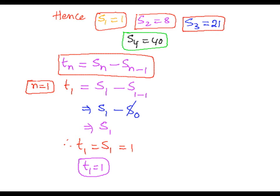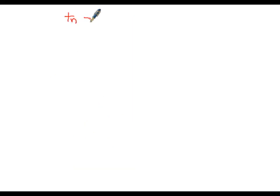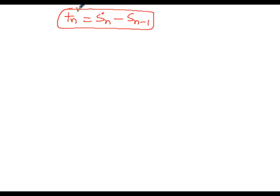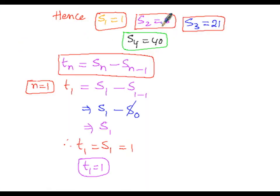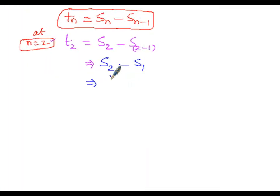To get the second term, at n equals 2, T(2) equals S(2) minus S(1). As per the problem, S(2) equals 8 and S(1) equals 1. So T(2) equals 8 minus 1 equals 7. The second term is 7.